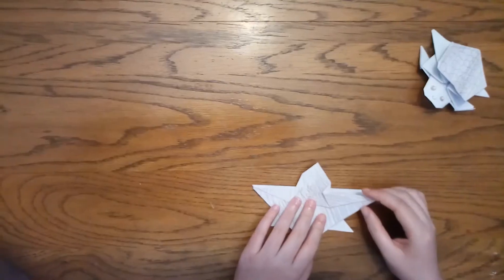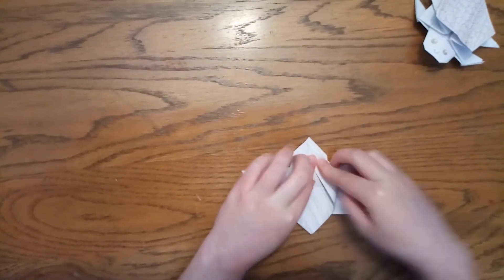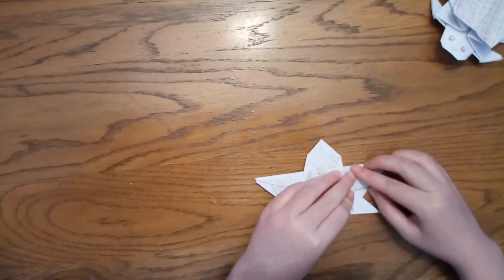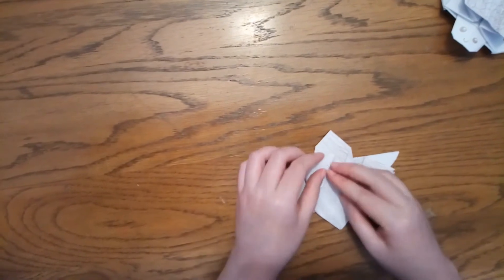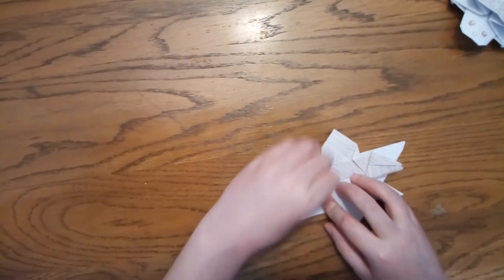Then you're going to want to take this flap here. Fold this. The corner comes to that middle fold line. Crease it. And then pull this back out. This will be the other feet. And we're going to do the same on the other side. Folding it to that center line there. And then bringing it out.